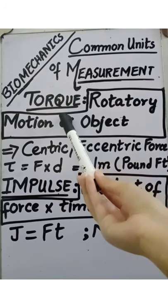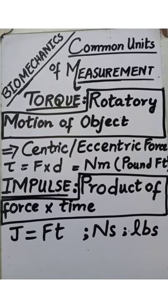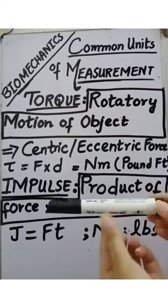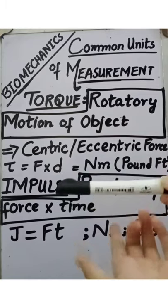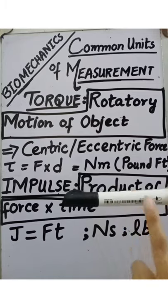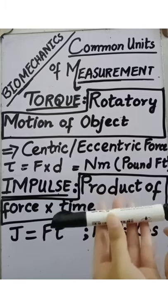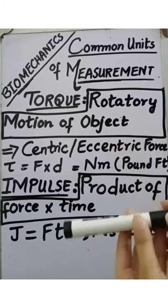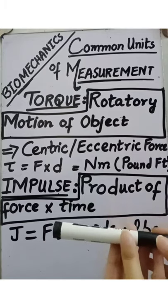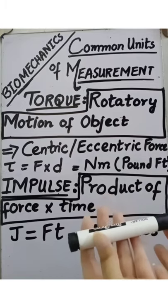The next measurement is torque. What is torque? Torque is the rotatory motion of an object. Rotation is produced by two types of forces: centric force and eccentric force. If I apply force to the middle of this pen, it will only move in the direction of the force applied. But if I apply force at the tip of this pen, the pen will start to rotate — and this rotation is known as torque. This is produced by eccentric force, because the force is applied not at the center but at the edges.